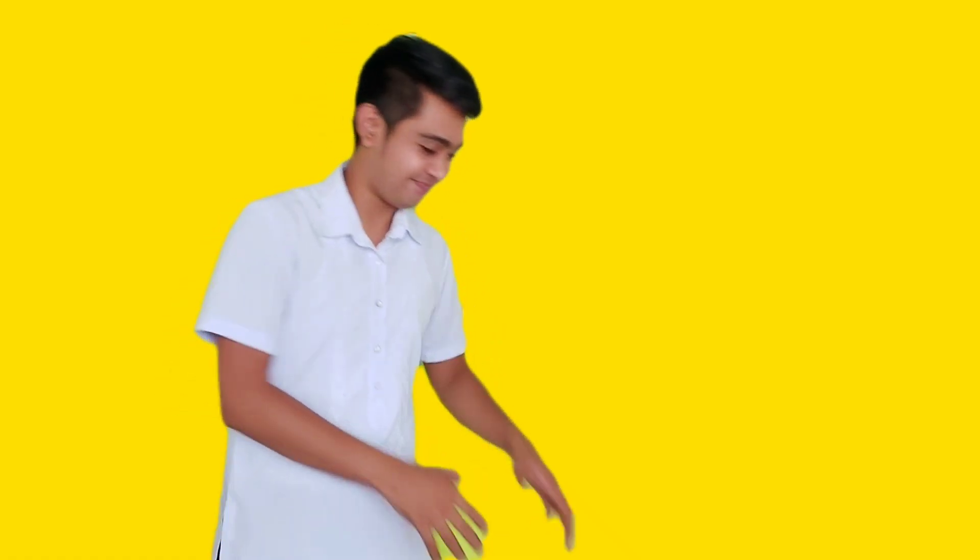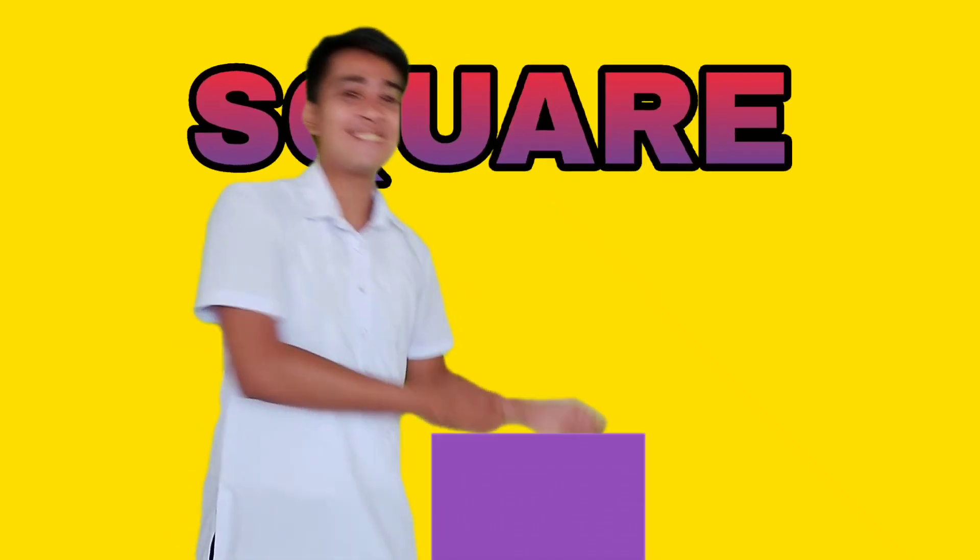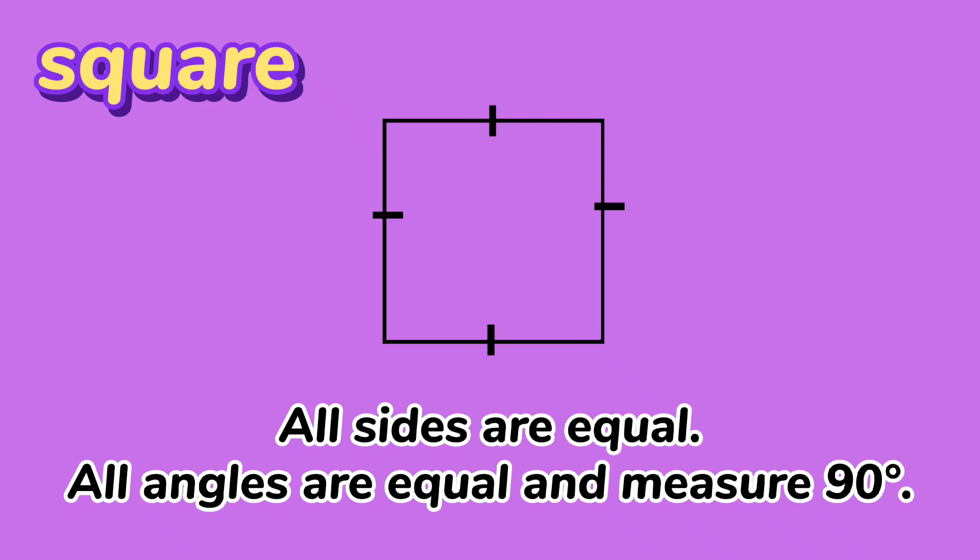The fourth one is the square. All sides are equal. All angles are equal and measure 90 degrees.